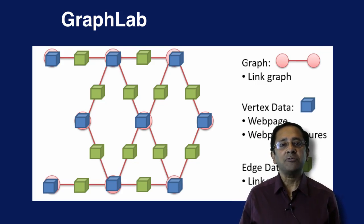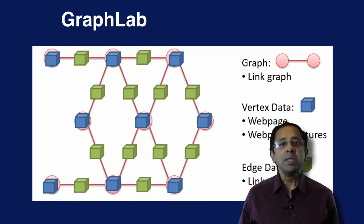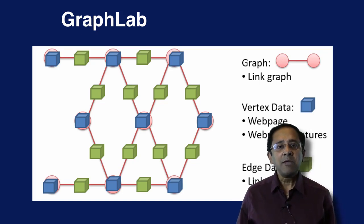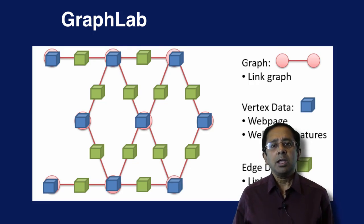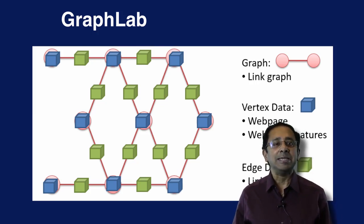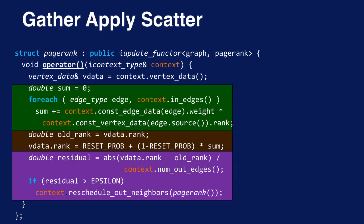We have now seen two examples of graph analytic operations on the BSP programming model. GraphLab, originally a project from Carnegie Mellon University and now a company called Dato, takes a similar yet different approach. In GraphLab, any kind of data can be associated with a vertex or an edge, stored in what is called the data graph. GraphLab breaks the computation into three user-specified functions called gather, apply, and scatter — or GAS for short.